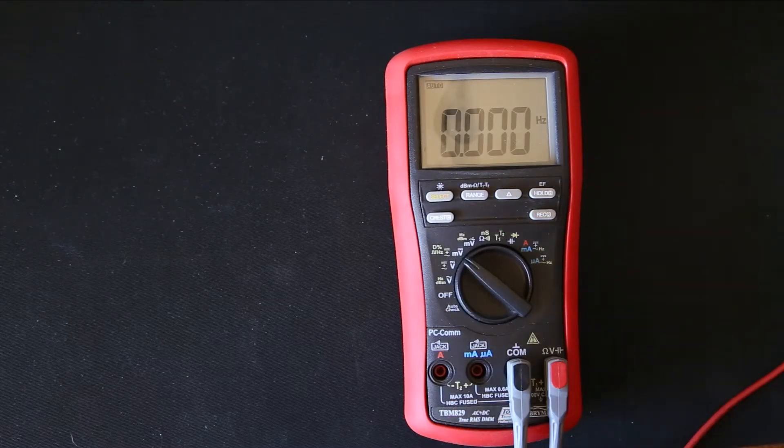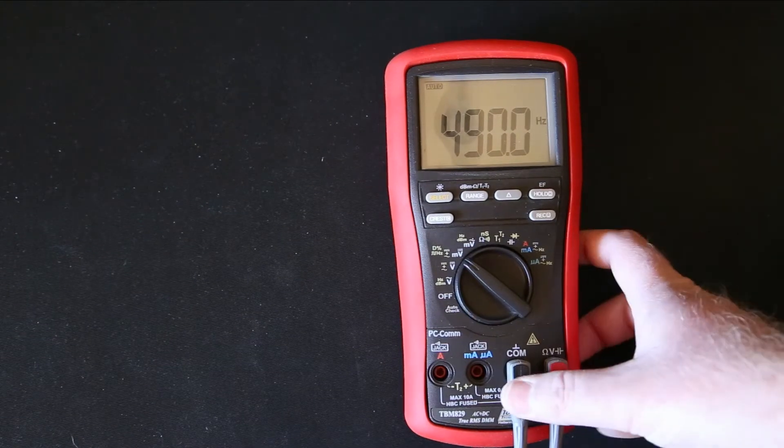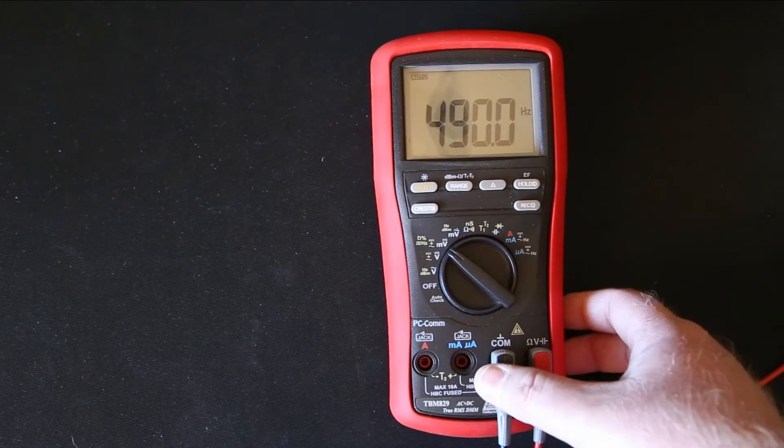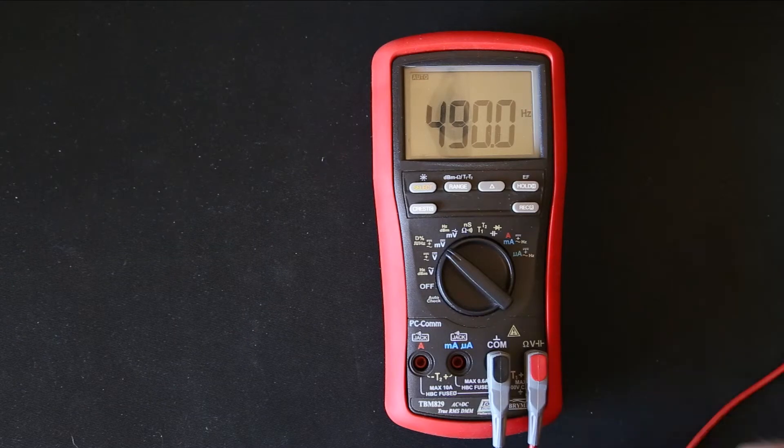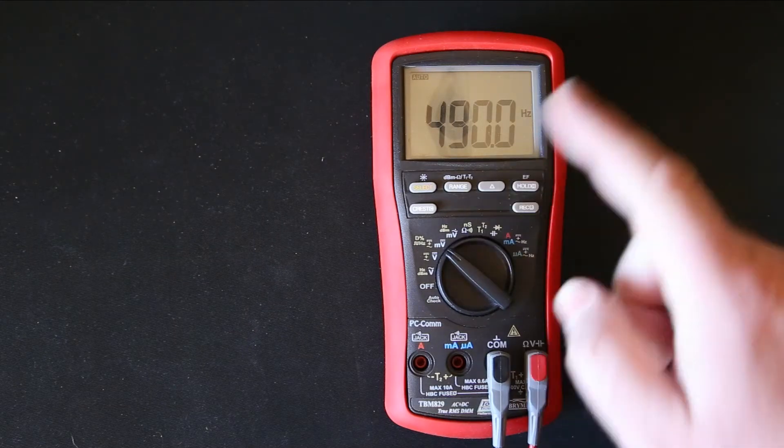Right, here we have our frequency. Let's start up this thing. I'm on one percent, but let's see. I'm generating a one percent duty cycle, 490 hertz. So 490 hertz measured.